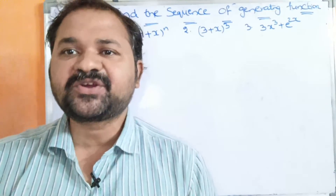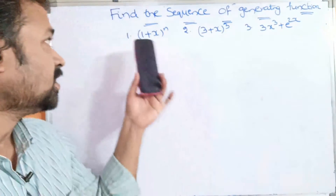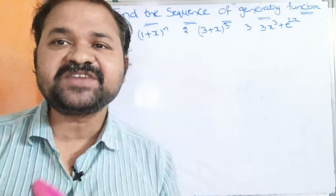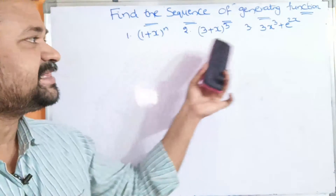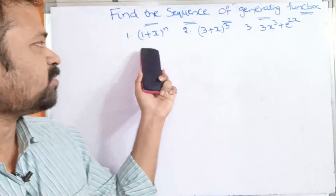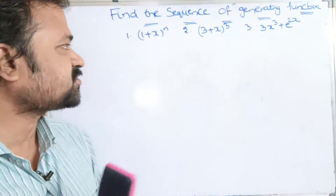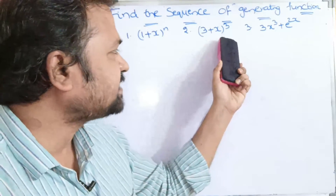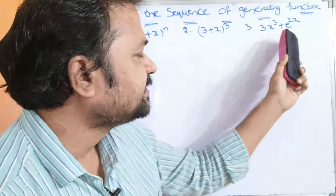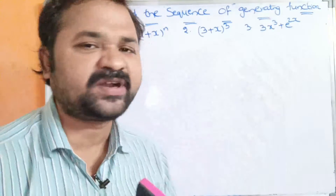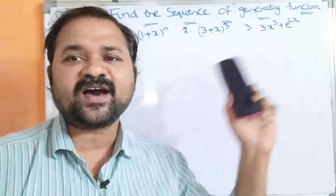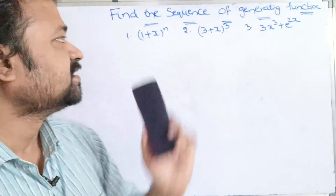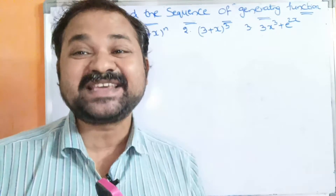In this video, we are going to discuss how to find the sequence of a generating function. Totally three generating functions are given: the first problem is (1+x)^n, the second problem is (3+x)^3, and the third problem is 3x³ + e^(2x). From these generating functions, we have to find out the sequence.